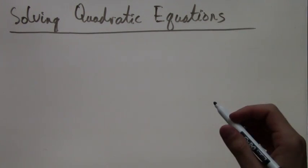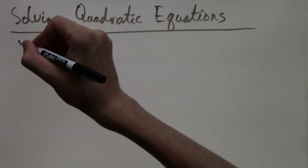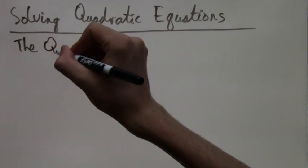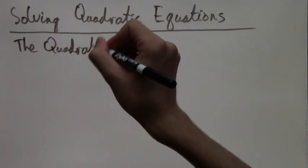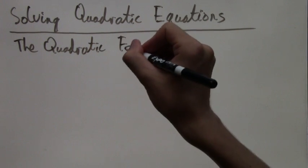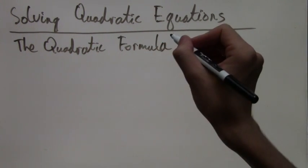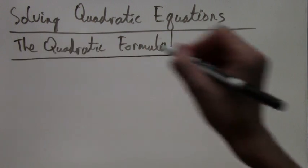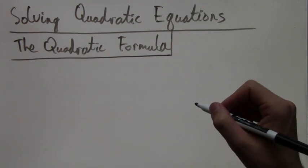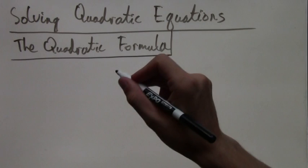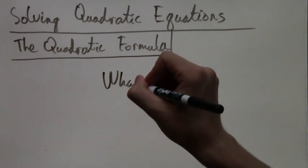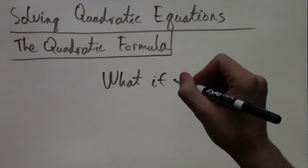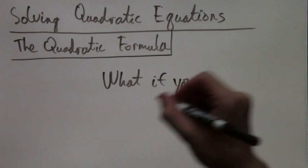So there are two ways of solving quadratic equations: the factoring method and the quadratic formula. Now the problem with the factoring method is that it doesn't always work. It's not possible to factor every single quadratic equation. And so when you can't factor, you have to use the quadratic formula.